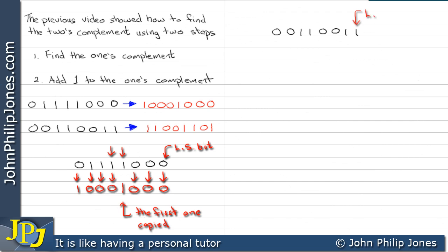We must always start at the least significant bit and copy down. We copy the 1 down, and that's the first 1 we've copied down. As soon as you've copied your first 1,